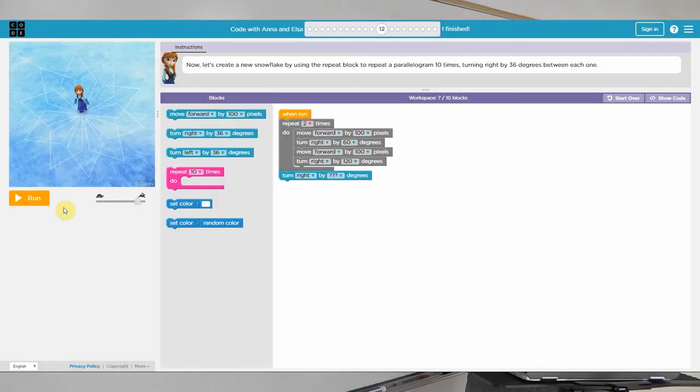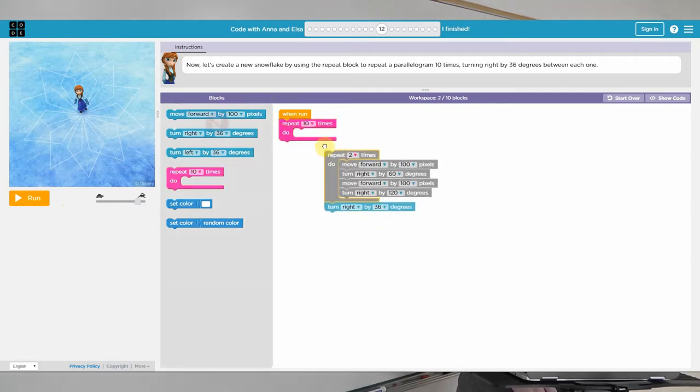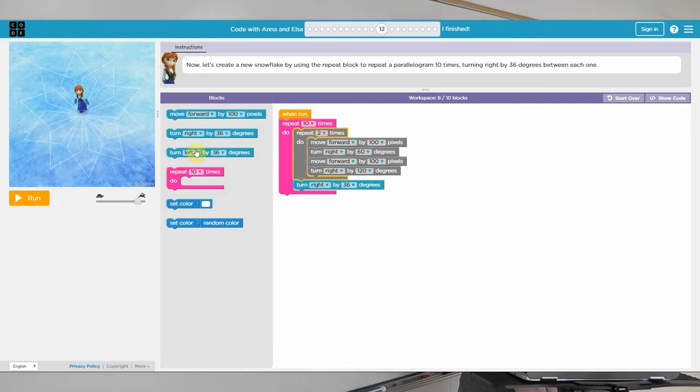The third characteristic of algorithms is iteration. Iteration means repeating something. If you ever coded the Frozen module in Hour of Code, you used iteration to draw shapes on ice. In coding, iteration is implemented through loops, such as for loops or while loops.